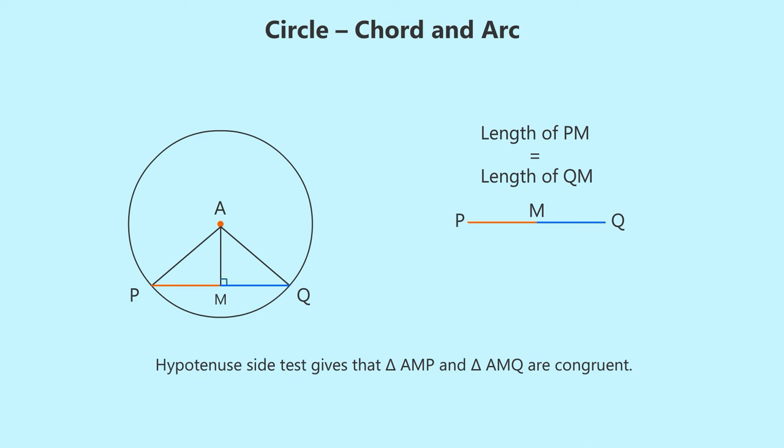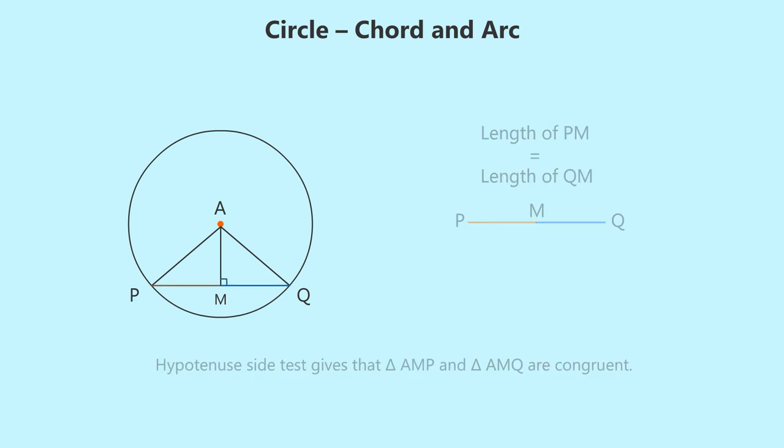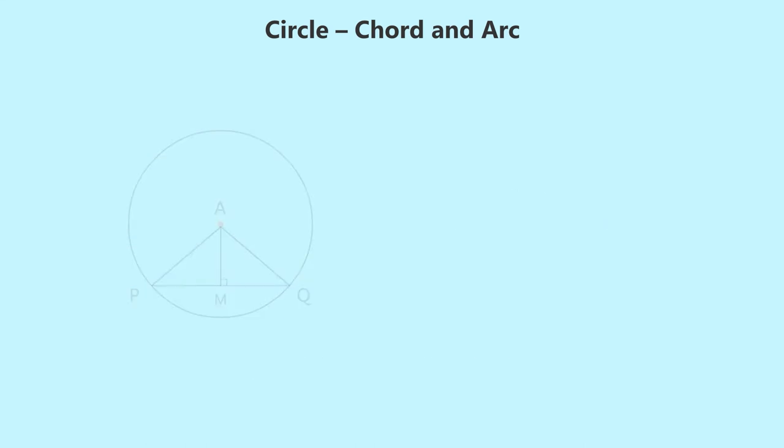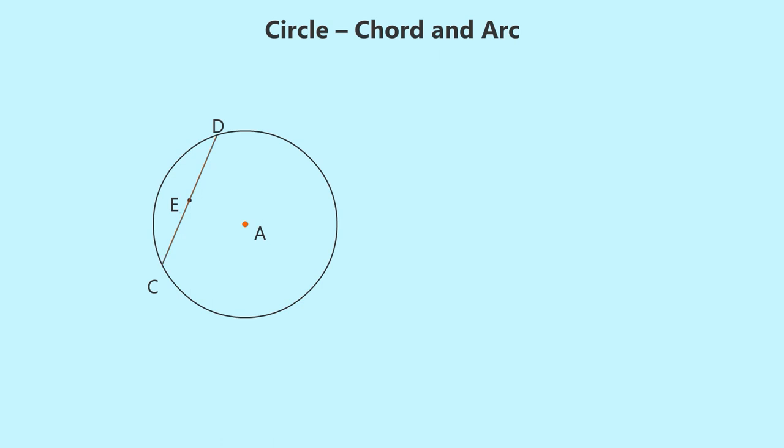Okay, now let us ask a similar question. Let CD be a chord of the circle and E be its midpoint. Now if we join points A and E, what can we say about angle AEC and angle AED? Let us draw radius AC and AD.